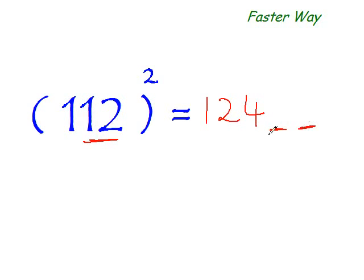So 12 square is 144. So write one here, four here, and the other four here. Now, the answer would be 12,544. That's your answer.